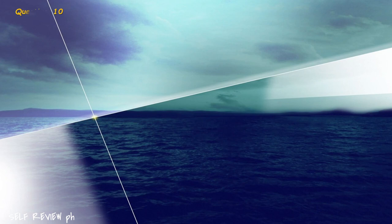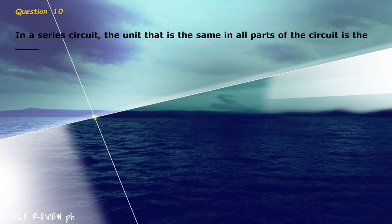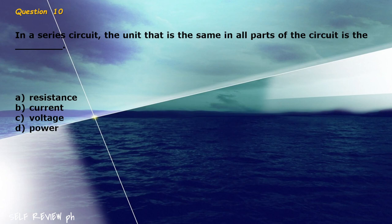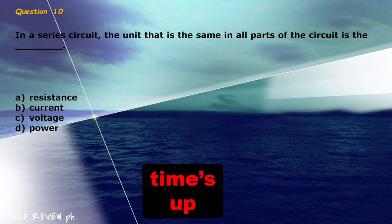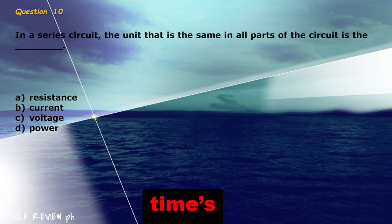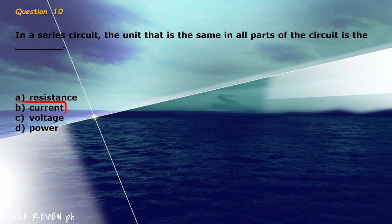Question 10: In a series circuit, the unit that is the same in all parts of the circuit is the blank. A) resistance, B) current, C) voltage, D) power. The correct answer is letter B, current.